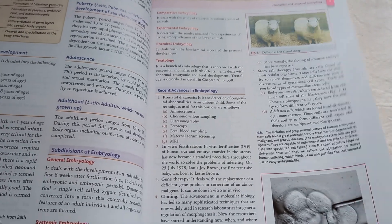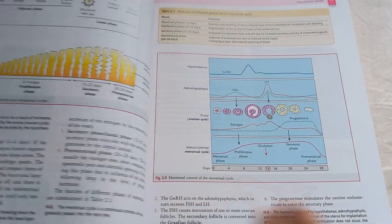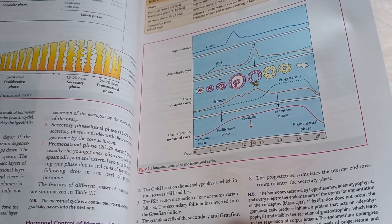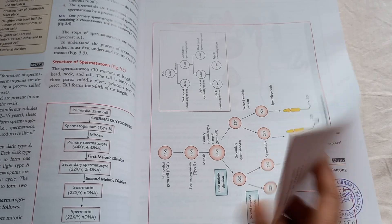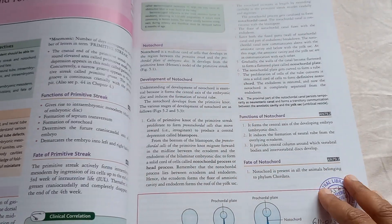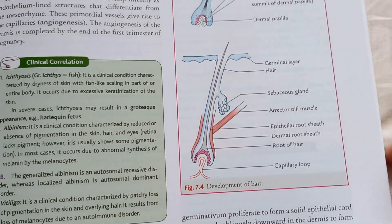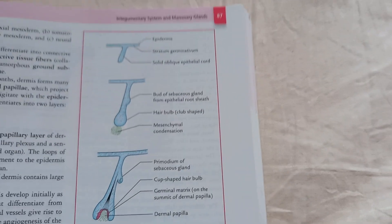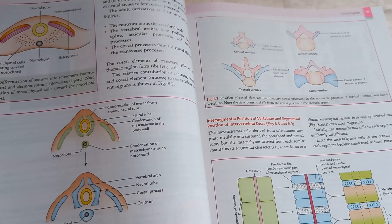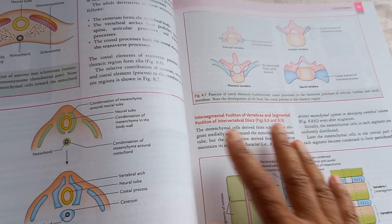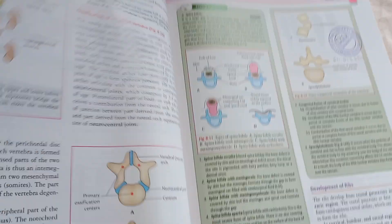Here they are showing you fertilization and the menstrual cycle. They also cover how hair develops — wow! And here is the spinal section, this is a vertebral segment.